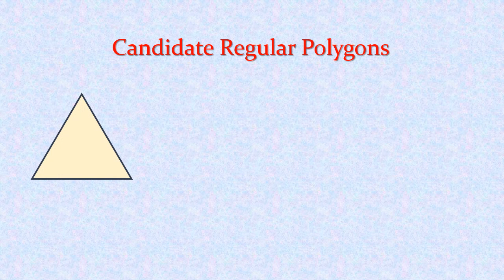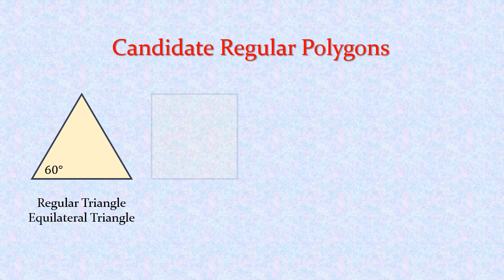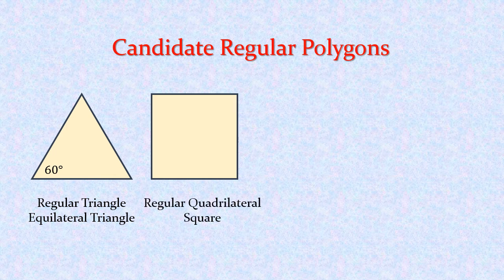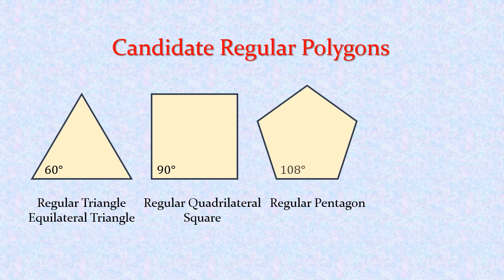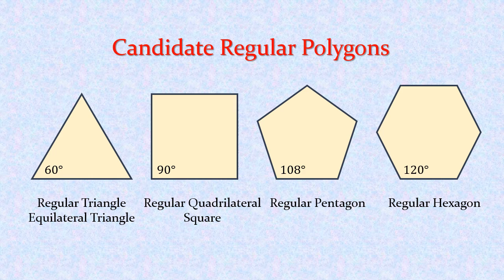So what are the candidates we'll use for regular polygons to create our regular polyhedra? There's the equilateral triangle, which has an interior angle of 60 degrees. There's the square, or regular quadrilateral, which has an interior angle of 90 degrees. The regular pentagon, which has an interior angle of 108 degrees. And finally the regular hexagon, which has an interior angle of 120 degrees.